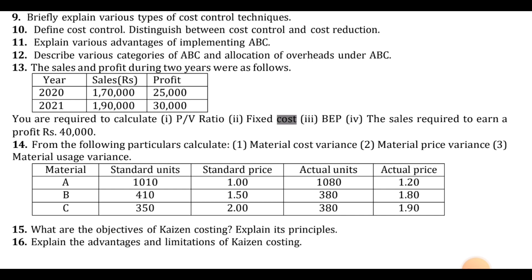Question sixteen: explain the advantages and limitations of kaizen costing. That concludes the model question paper. In the next video, the remaining CA sixth semester subject model papers will be uploaded.